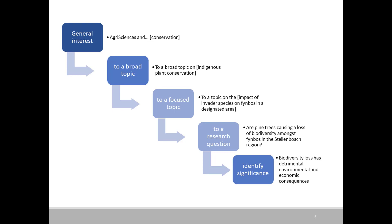This is perhaps a more detailed way to show how you narrow down from a specific research area. Once you have an area in mind, you'll need to keep going until you reach both a research question and the significance of your research. If you look at the example on this slide, you will see you move from a general interest to a broad topic, to a focused topic, then to a research question, which helps you identify the significance of your study.